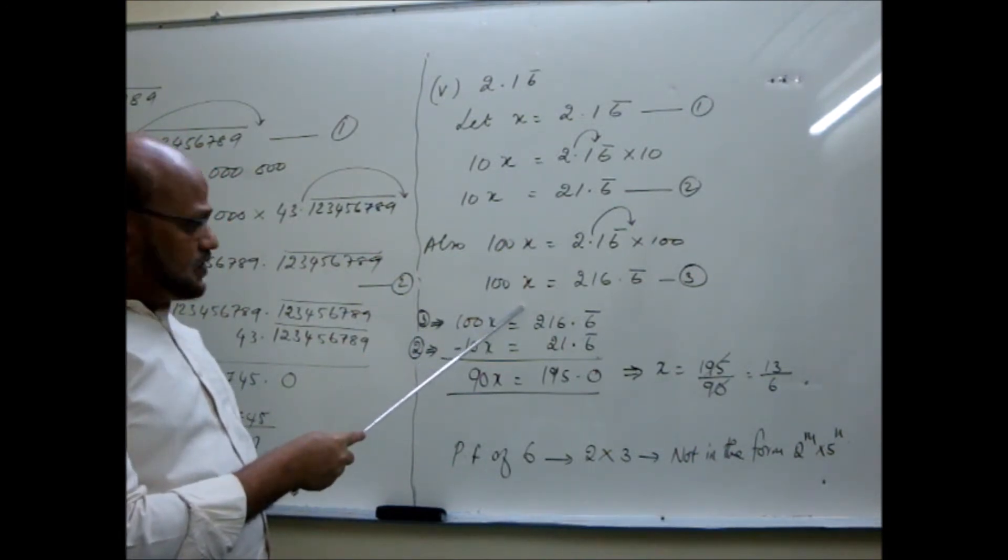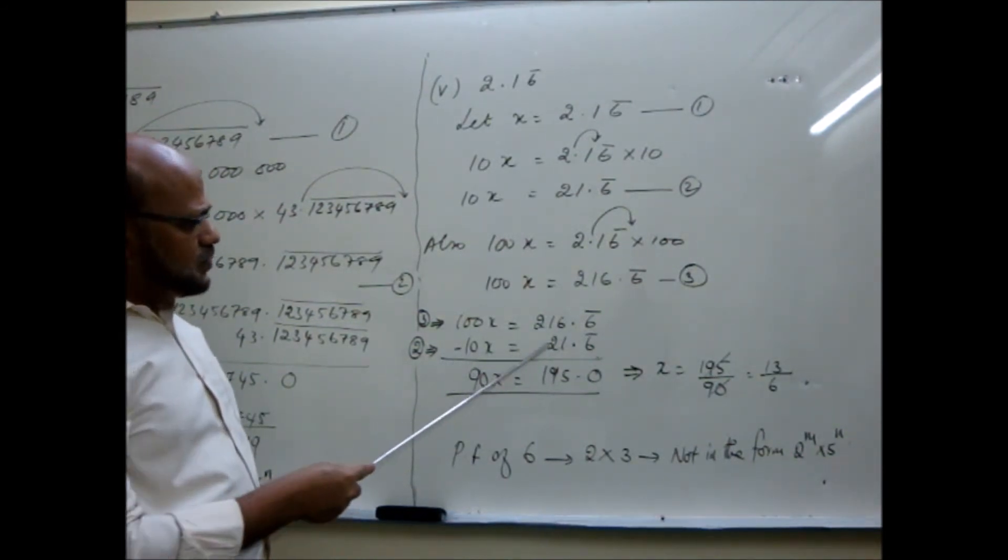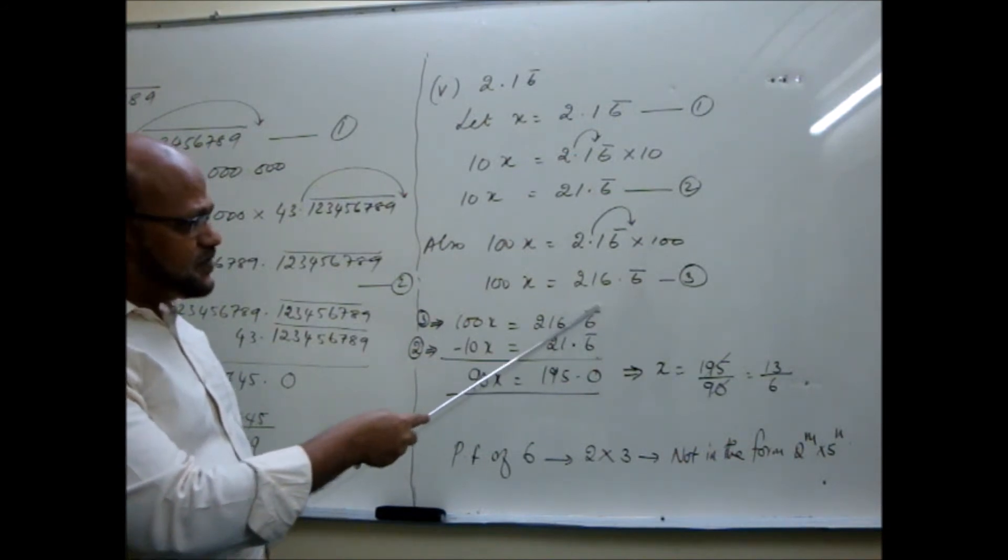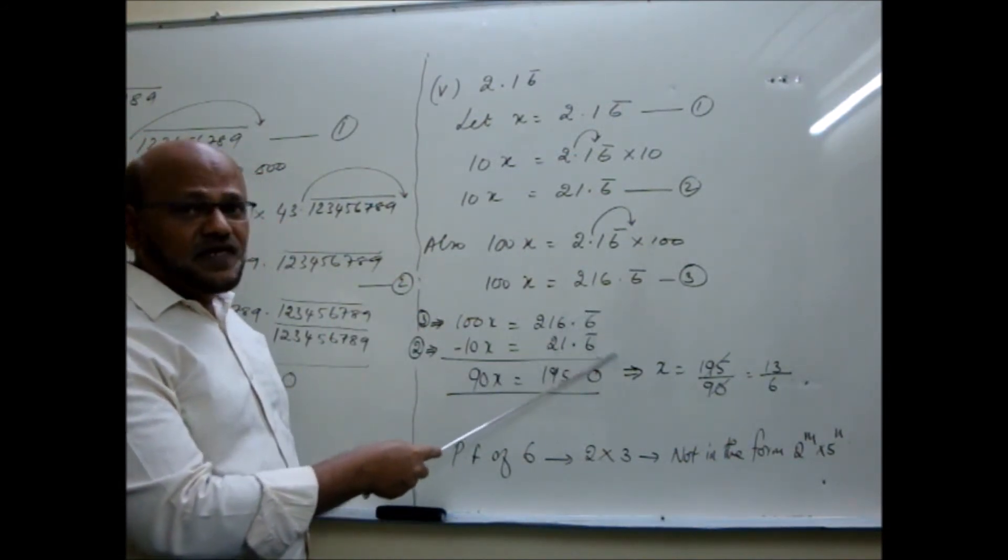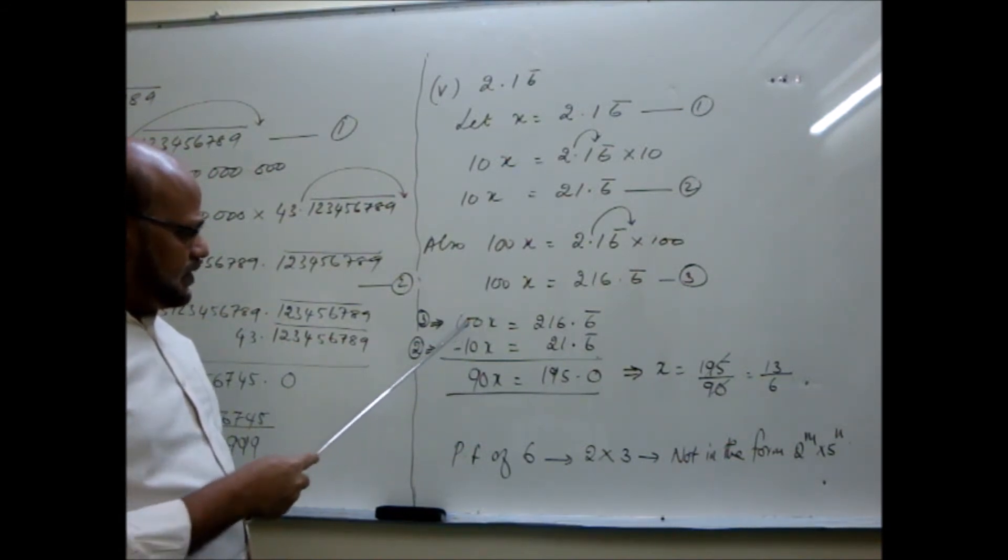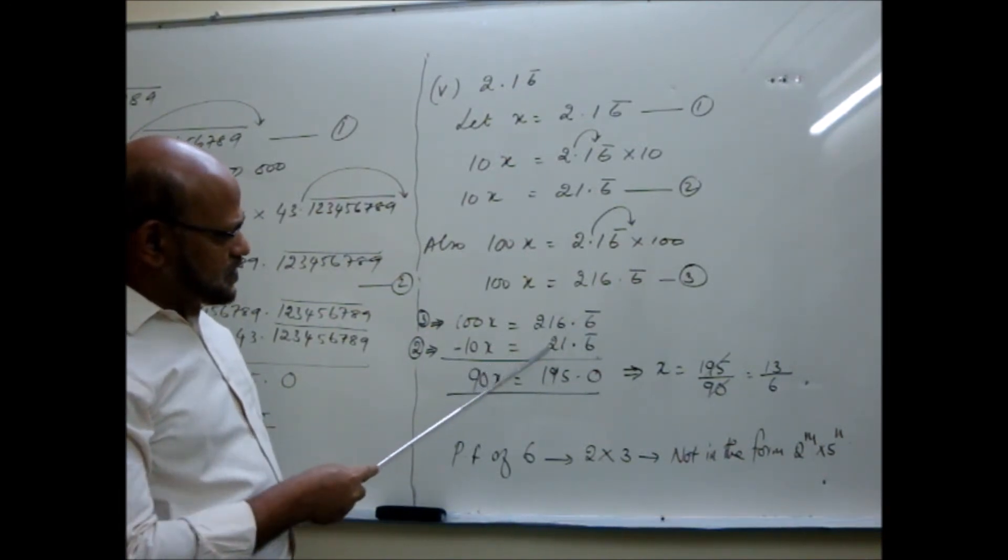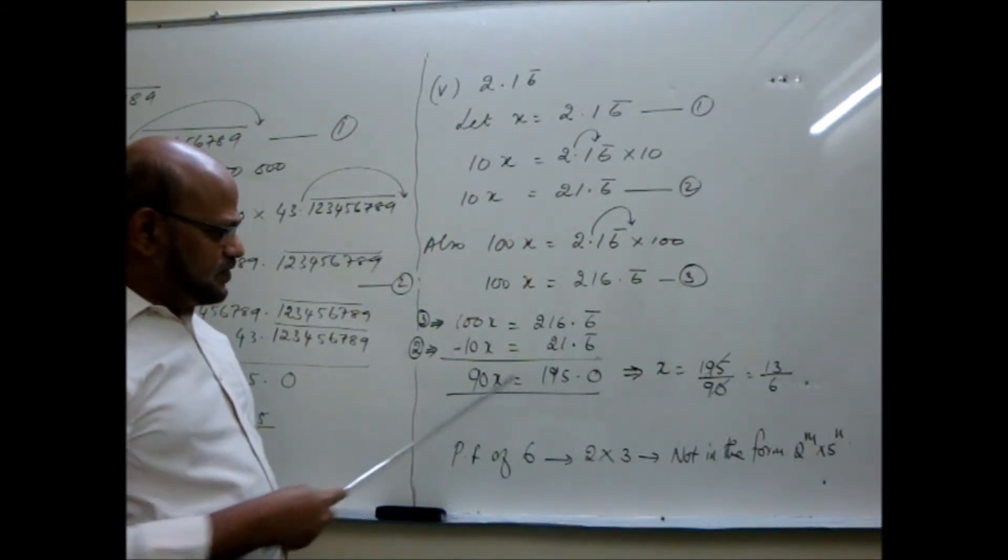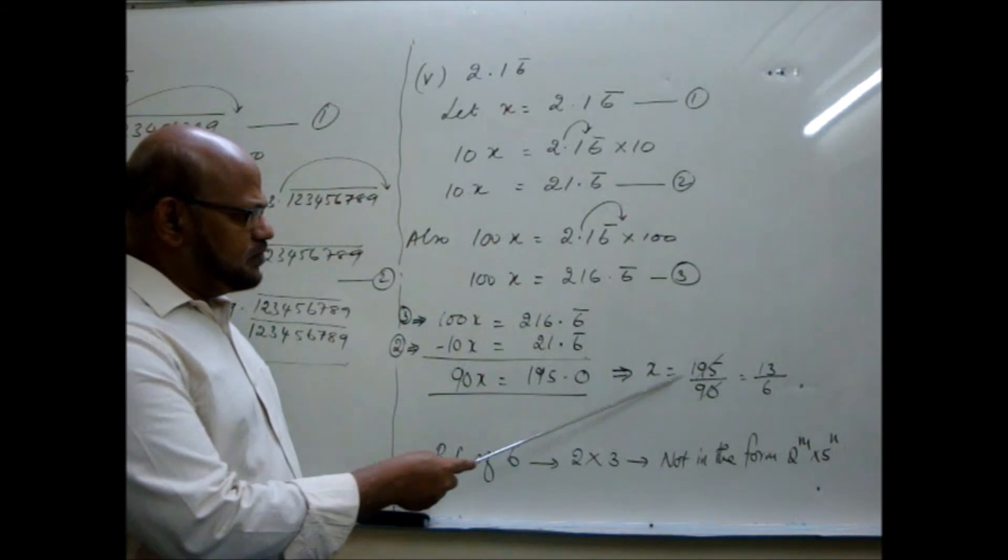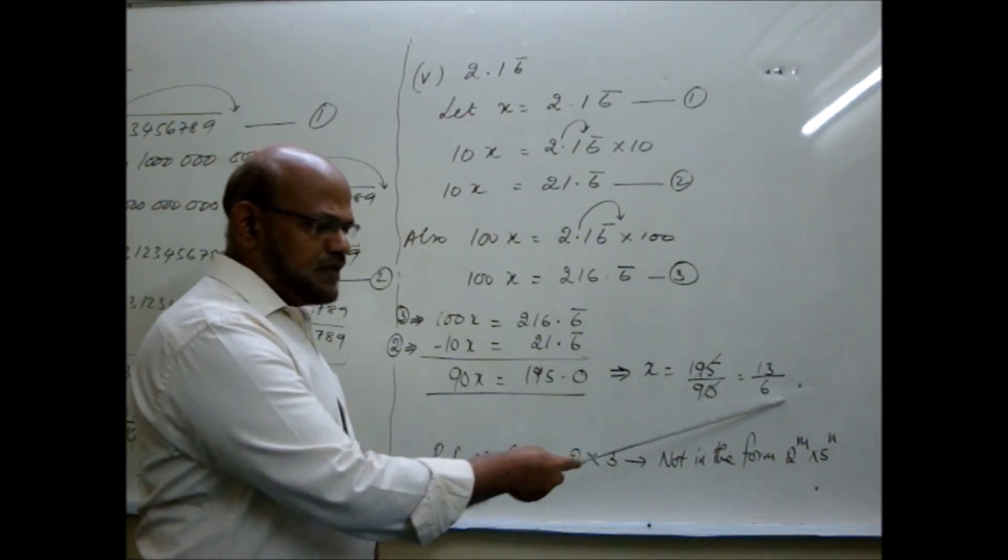This you arrange and see. 100x is equal to 216.6 bar, 10x is equal to 21.6 bar. You note down this 6 bar comes in the same column. Now if I subtract, this part will become 0. I need to eliminate this repeating factor. This should not come. So that is why we do this job. So what happens here? 90x when I subtract it. 100x minus 10x is 90x. Here subtracting this becomes 0. Here 216 minus 21 is 195 coming. So now what I get here is transposing 90 there, x is equal to 195 by 90. So x is equal to 195 by 90. When I simplify, I get 13 by 6. This is in the form P by Q.